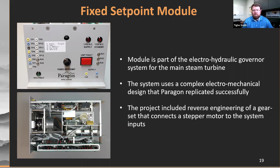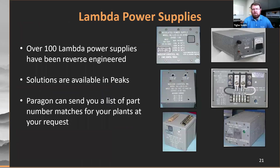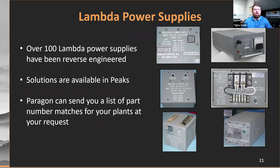I want to talk just for a moment about Lambda power supplies — they're ubiquitous in the U.S. nuclear industry. We've been able to reverse engineer over 100 different Lambda power supply designs. You can go into our catalog at paragondes.com and search in PEAKS to find them there. If you'd like us to do that service for you, get in contact with us — we'll take a look at the part numbers you've got for Lambda power supplies, match them up to the ones available from us. We may find that some are more like cousins instead of exact replicas, and you can really cut down the expense of reverse engineering if you've got a component that's close to start with.